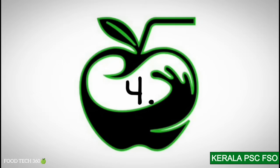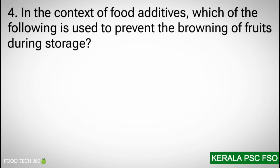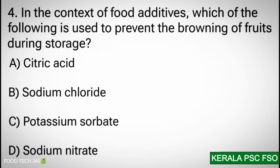Question 4: In the context of food additives, which of the following is used to prevent the browning of fruits during storage? Options: a) citric acid, b) sodium chloride, c) potassium sorbate, d) sodium nitrate.